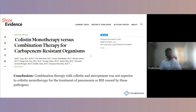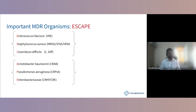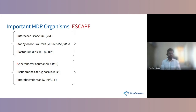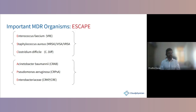Common MDR organism terminology: VRE — vancomycin-resistant Enterococcus; MRSA — methicillin-resistant Staphylococcus aureus; VISA — vancomycin-intermediate Staphylococcus aureus; VRSA — vancomycin-resistant Staphylococcus aureus; C. diff; CRAB — carbapenem-resistant Acinetobacter baumannii; CRPA — carbapenem-resistant Pseudomonas aeruginosa; CRKP — carbapenem-resistant Klebsiella pneumoniae; and carbapenem-resistant E. coli.